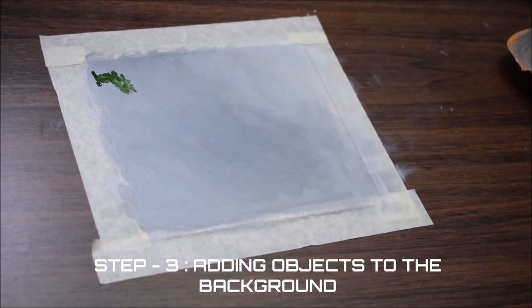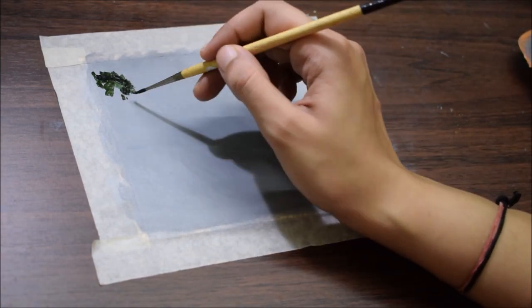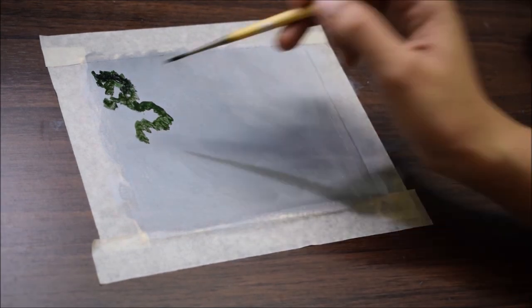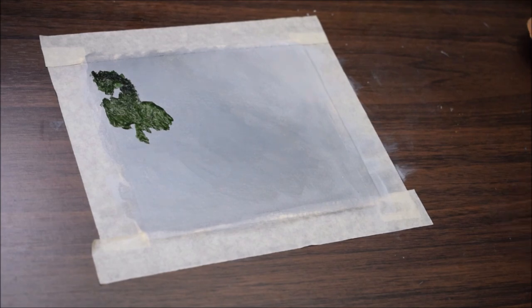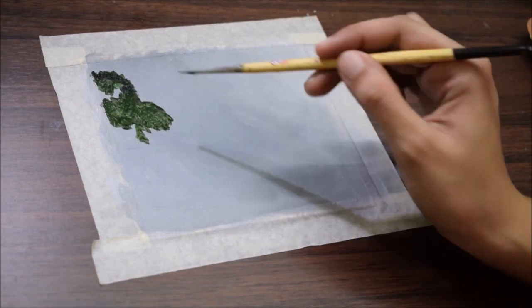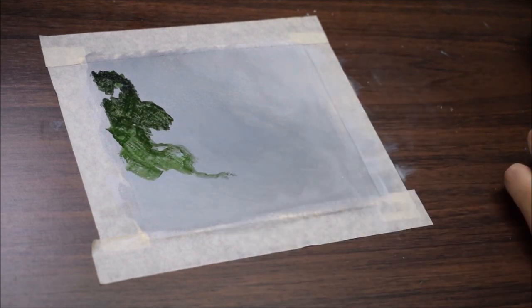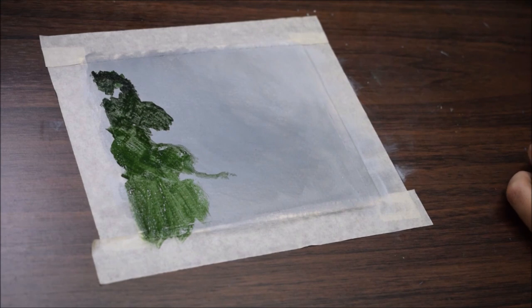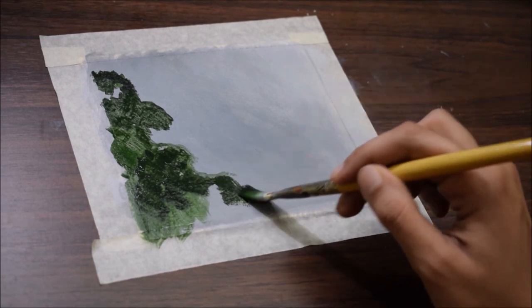Now in step 3, I have mixed sap green with a little black and now I am going to make a random shape that after blurring would look like a distant tree. You can copy the exact shape that I am making here or can paint a different shape according to yourself. The point is it's completely okay if you are not able to copy the exact tree what I am making here. It's just a tree that too blurred, it could be of any shape.